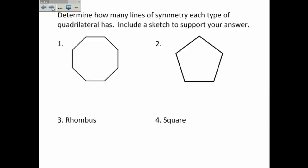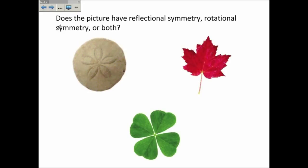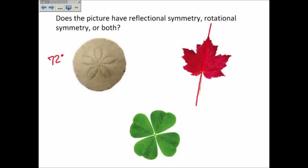Now, a few other examples — determining how many lines of symmetry, and whether the picture has reflexional symmetry, rotational symmetry, or both. There are lots of things, either logos or things in nature, that have either reflexional, rotational, or both. This image has reflexional symmetry just like the star did, and also like the star, if you rotate it five times it would be 72 degrees of rotational symmetry. The leaf, roughly down the middle, is reflexional. The four-leaf clover has reflexional symmetry two ways, and it can rotate 90 degrees, so it has rotational symmetry as well.